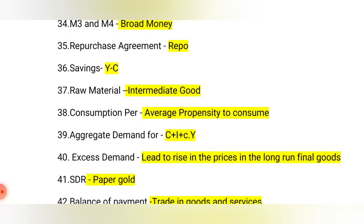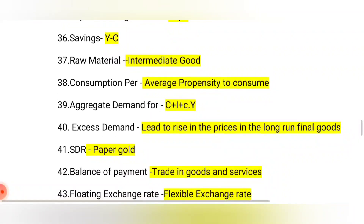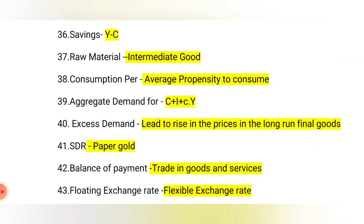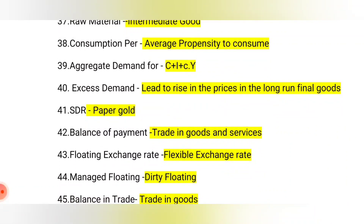Savings: when you remove consumption from income, the rest of the money is saving — Y minus C equals saving. Raw material is intermediate goods that will be transformed into final goods. Consumption per — APC — is average propensity to consume.